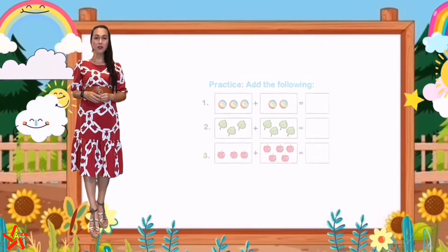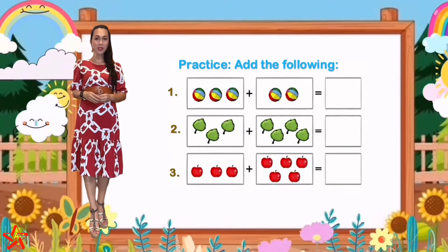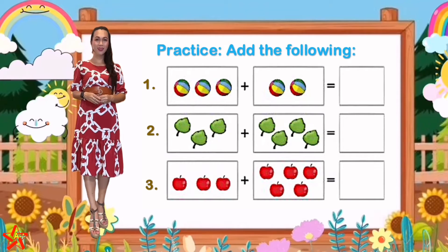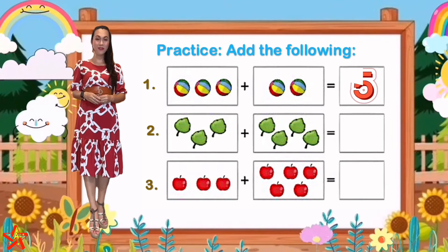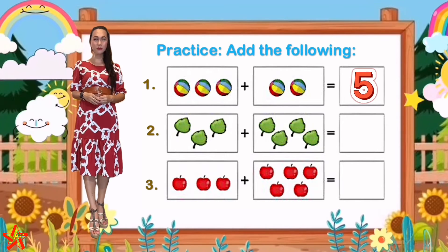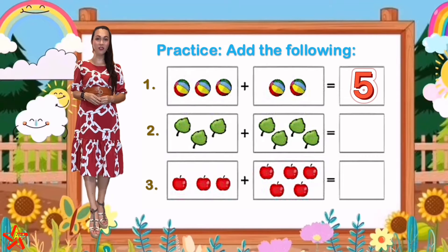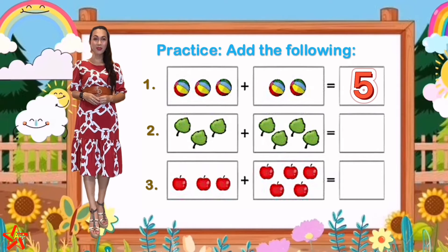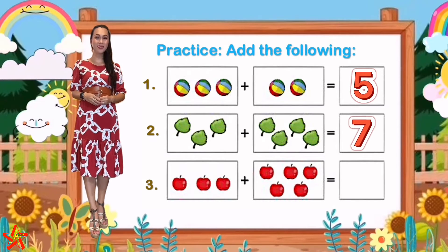I would like to test whether you understood our lesson for today. You have to add the following — I put objects or pictures and I want you to count and find the total number. Picture number 1: the object is a ball. How many balls are there altogether? Very good — 5 balls. How about number 2? The object is leaf. How many leaves are there altogether? 3 and then 4 — 7. 7 leaves. Very good.